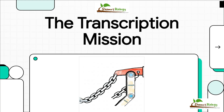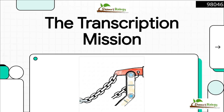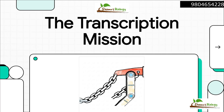All right, let's jump right in. Today, we're basically going on a mission inside a bacterial cell. Our target? Unpacking the entire process of prokaryotic transcription. We're going to decode how that DNA blueprint gets turned into RNA. And this is one of those core concepts you absolutely have to nail, especially if you've got your eye on an exam like the CSIR NET.